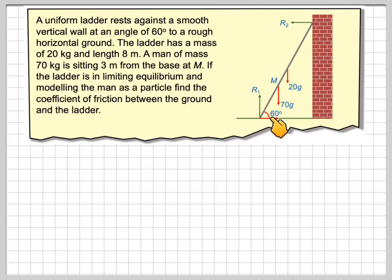Now, as the ladder would tend to slip that way, friction will act against this way because ground here is rough. However, there's no friction here because the wall is smooth.